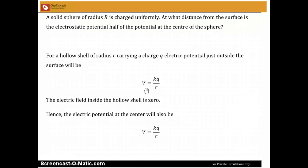And so the distance is r. And also we know that the electric field inside the hollow shell is zero. And since the electric field inside is zero, the potential at the center would be exactly the potential just outside the surface. And so the electric potential at the center will also be V equal to kq by r.